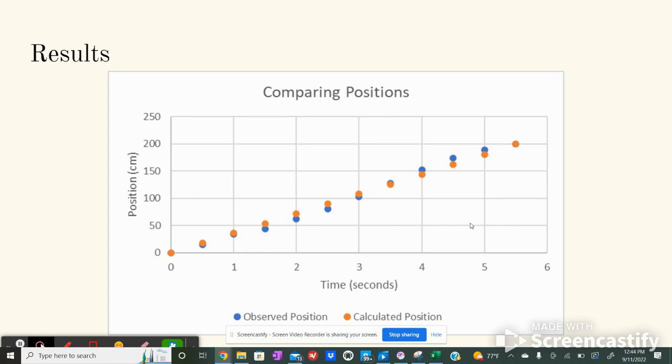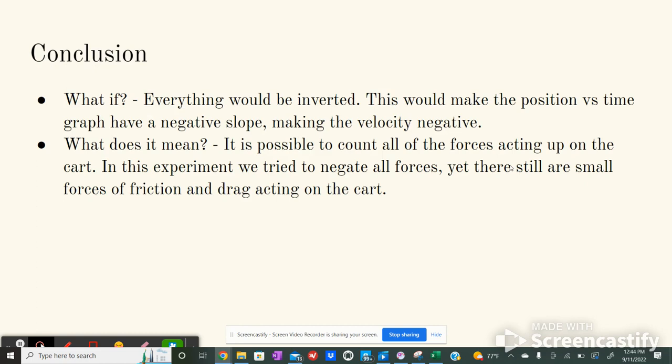In our results, we have our observed position and our calculated position on one graph showing you that the graphs look very similar as there's not much difference in the position. As for this last dot right here, they're both the same because it's 5.5 seconds and 200 centimeters or two meters, so therefore there's just one dot because it's on top of the other one.